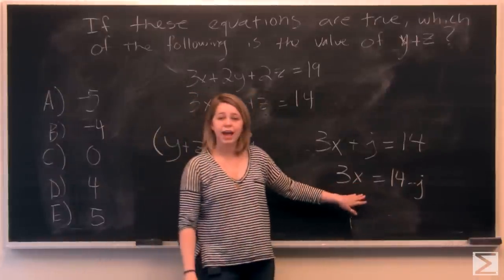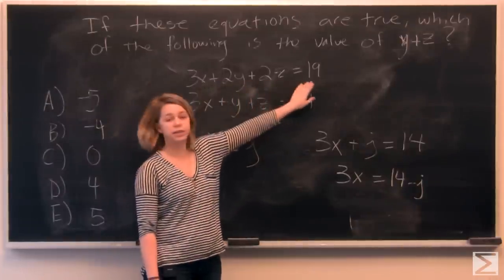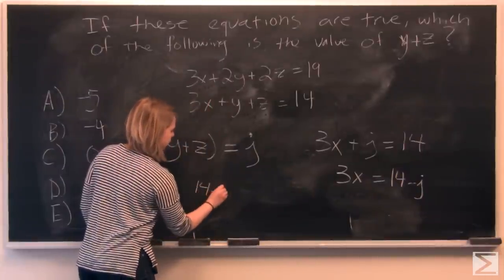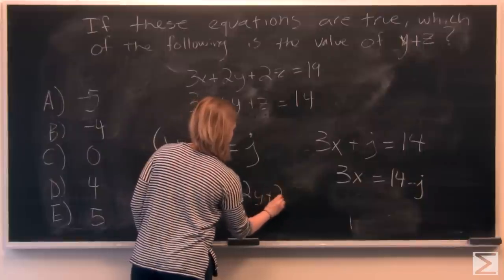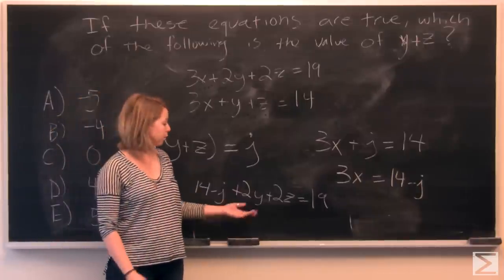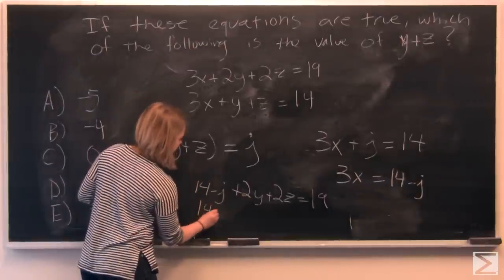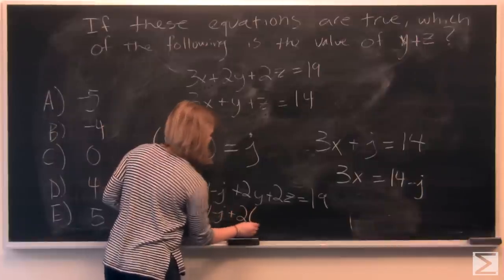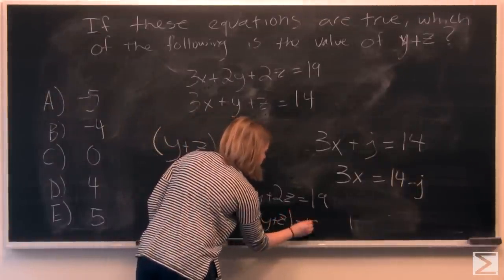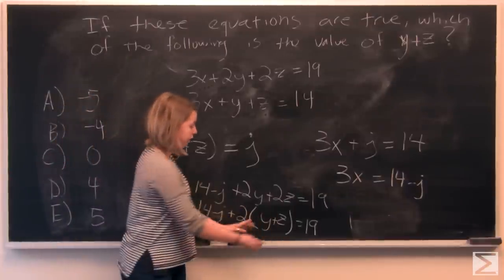And now that we have 3x, we can make a different substitution with our first equation. So here we have 3x plus 2y plus 2z equals 19. So let's put in 14 minus j for 3x. And now let's see if we can simplify 2y plus 2z so that we can make that in terms of j as well. So 14 minus j plus 2 times, we can pull the 2 out of y plus z. 2 times y plus z is equal to 19.